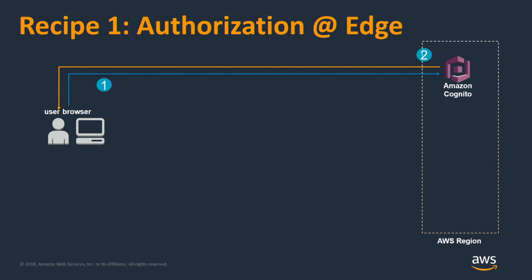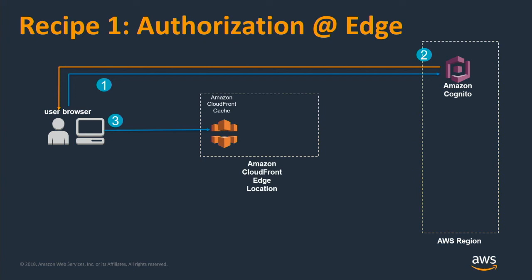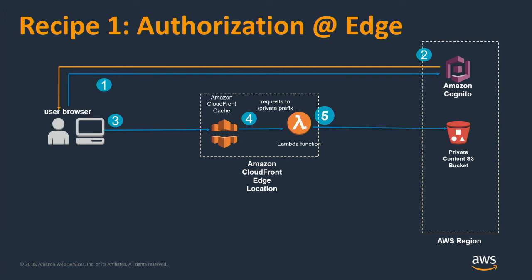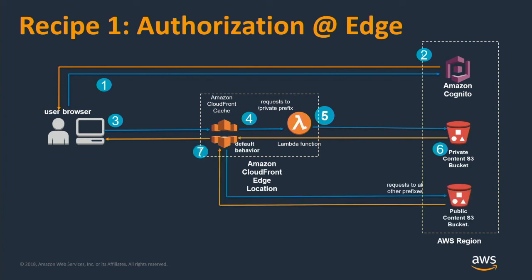Do you really need to modify your application logic for something that should be relatively straightforward? We thought about what we can do at the edge. If your request comes into Amazon CloudFront, you can create a Node.js function with Lambda@Edge that says: this request is for private content, let me decrypt the web token — is this user authorized? If so, great, send the request to your backend and serve the content. If the user is not authorized, the Lambda function can generate an HTTP 401 response directly. For regular public content, the request lands in CloudFront, continues to your origin, and we cache and serve it back.